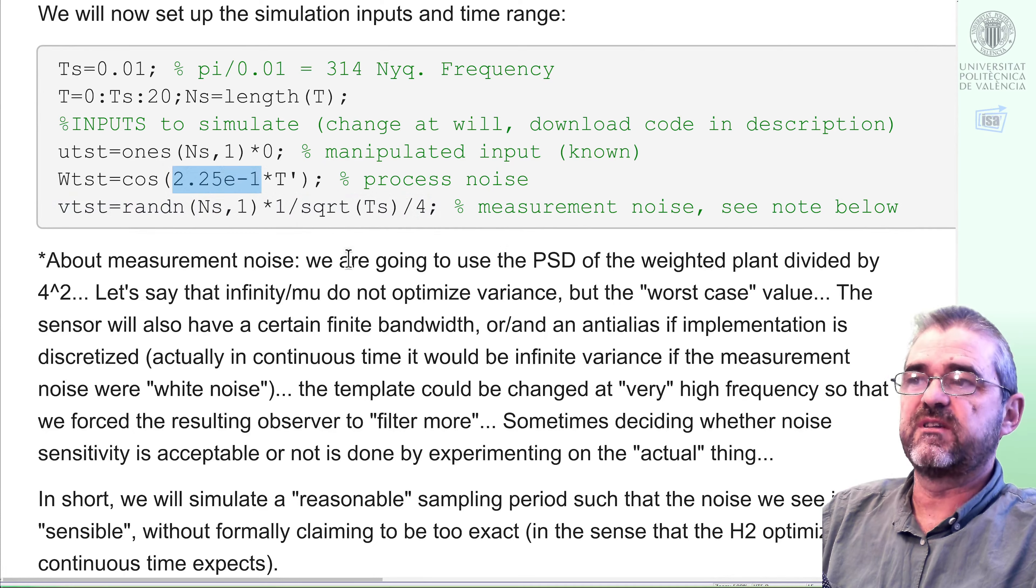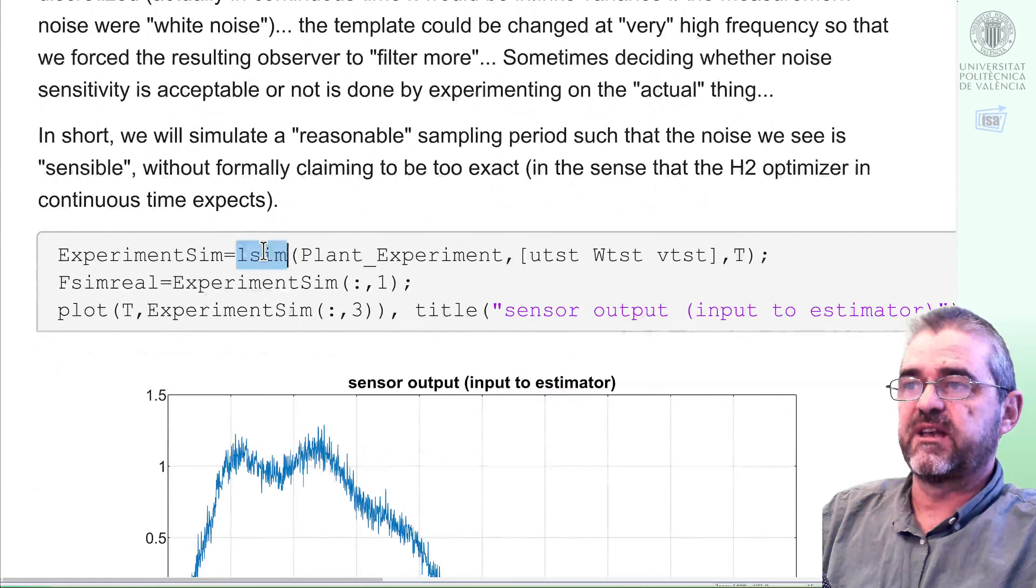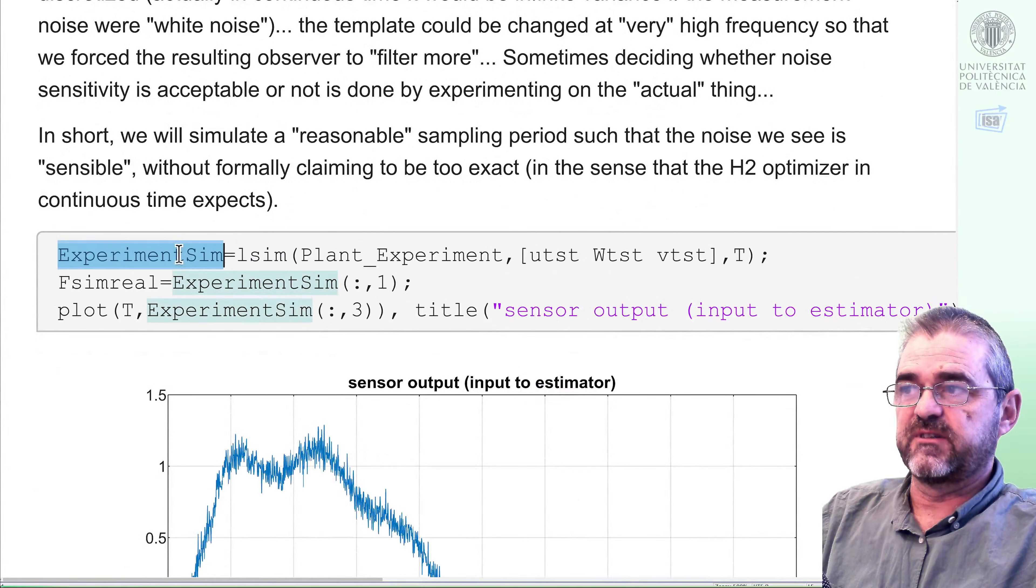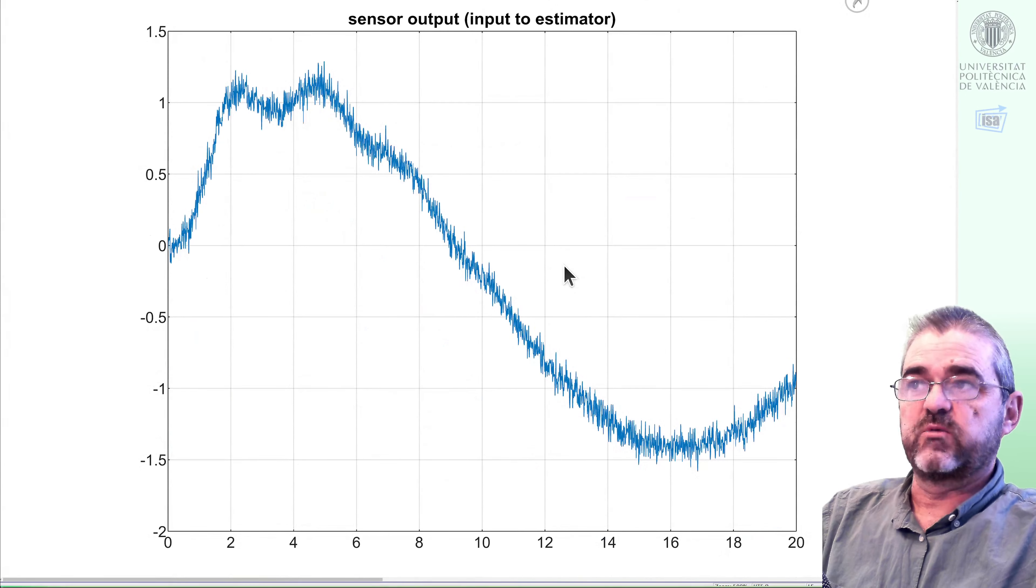So we simulate this low frequency cosine and let's see what happens. Well, this lsim carries out the experimental data, and the real force will be the first output, and the actual measurement will be the third output. So this will be the 20 seconds of sensor output I am measuring.